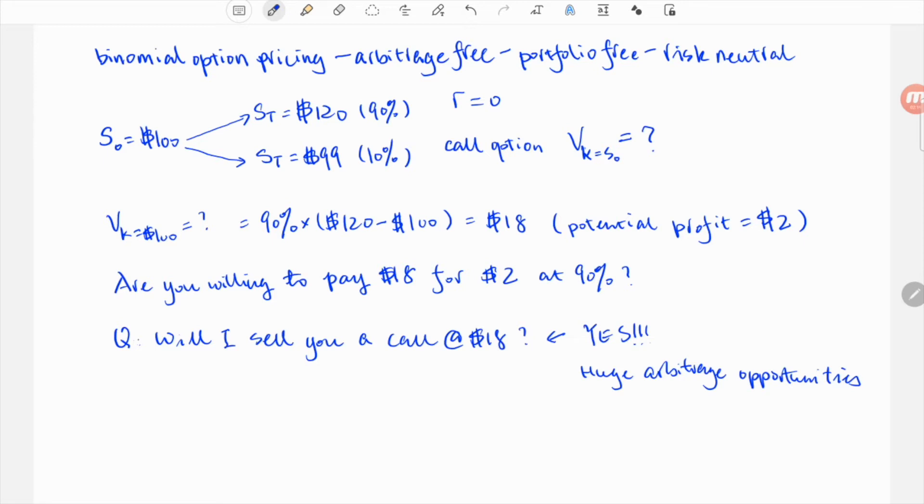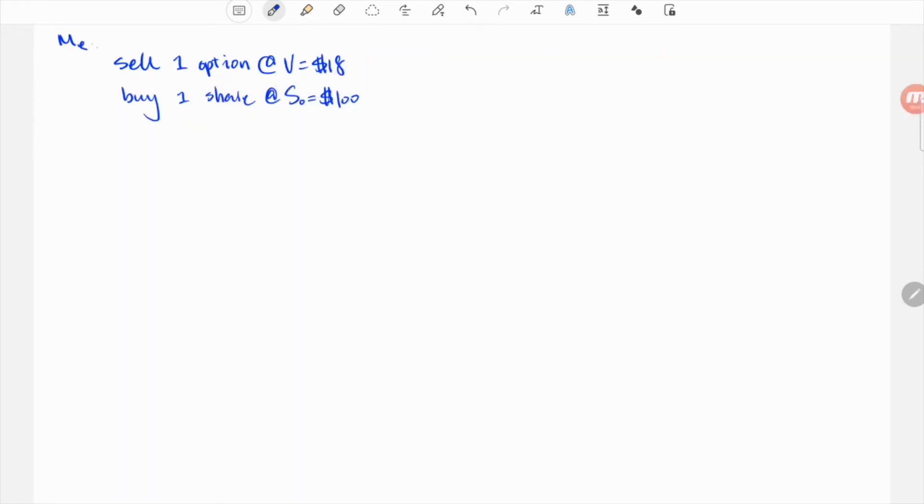After selling you that option, to understand my argument let's try to construct a simple portfolio. This is a simple case without any optimization through sophisticated math, just as an example. Imagine I write you a call option for one share of the underlying, but I also buy a share of the underlying, so the call is completely covered.